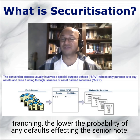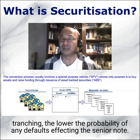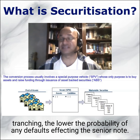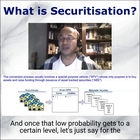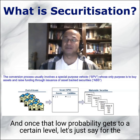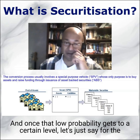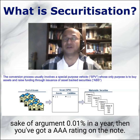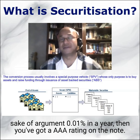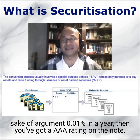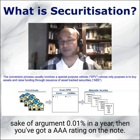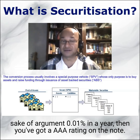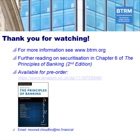The more defaults required in any 12-month period, the lower the probability of that happening. So the bigger the tranching, the lower the probability of defaults ever hitting the senior note. Once that probability reaches a sufficiently low level — say, 0.01% in a year — you achieve a triple-A rating on that note.